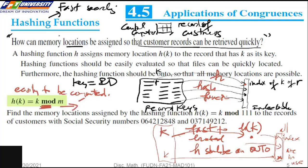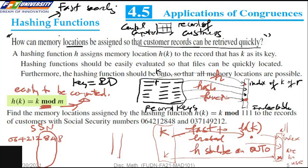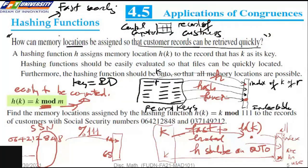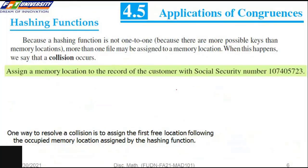The modulo operation is easy to compute, so it is commonly used for hashing. For example, to find the memory location using a hashing function based on a social security number, we compute the number modulo 111. The remainder is 14, so we store at index 14. For another record the result is index 65. We add the index and save the information of the customer there.